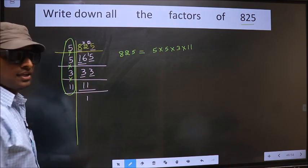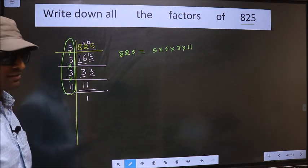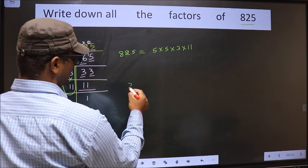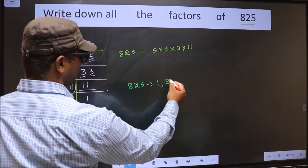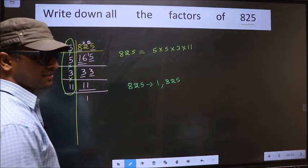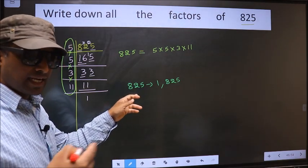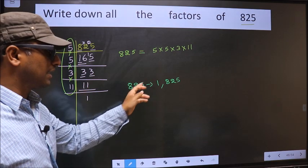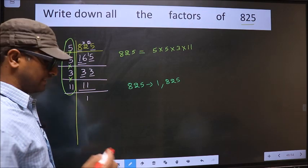Now let us write down all the factors of it. Any number you take, that number will definitely include 1 and the number itself in its factors. I repeat, any number you take, that will definitely include 1 and the number itself in its factors. Next.